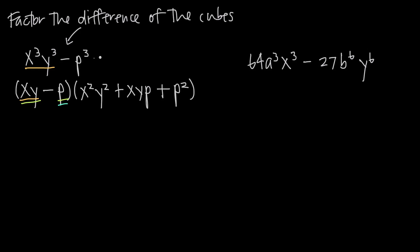That's how we factor the difference of cubes. We'll do another example and then check ourselves. With the second example, we have 64a cubed x cubed minus 27b to the sixth y to the sixth. Do we have a difference of cubes? We know we have a difference because of the subtraction sign in the middle. 64 is the cube of four because four times four times four is 64. a cubed is the cube of a, and x cubed is the cube of x. 27 is the cube of three because three times three times three is 27. The cube root of b to the sixth is b squared, and the cube root of y to the sixth is y squared, because y squared times y squared times y squared is y to the sixth. So we do, in fact, have the difference of two cubes.